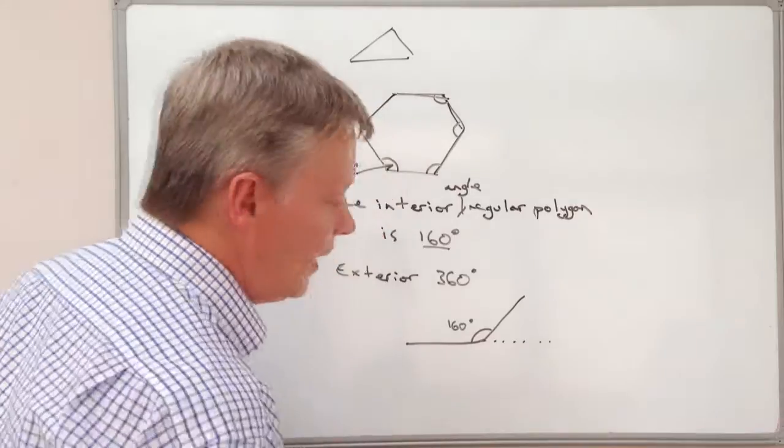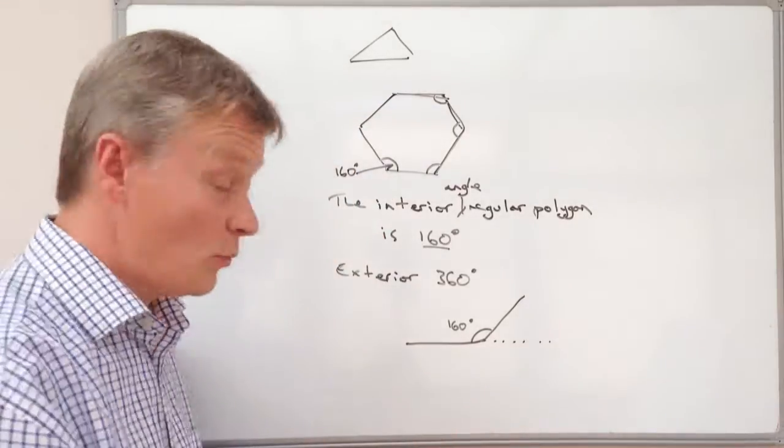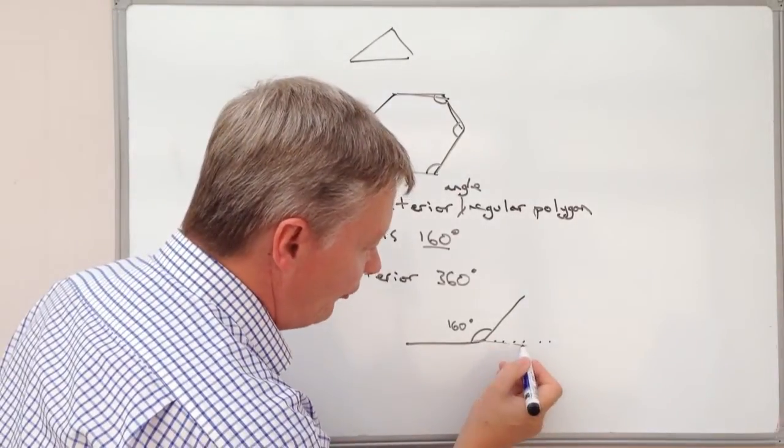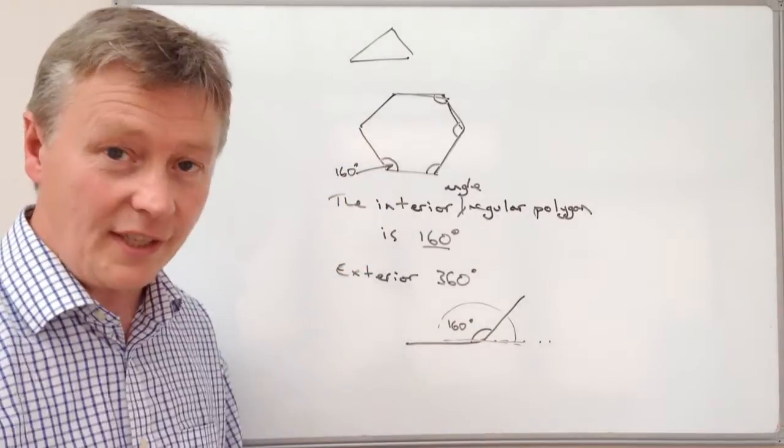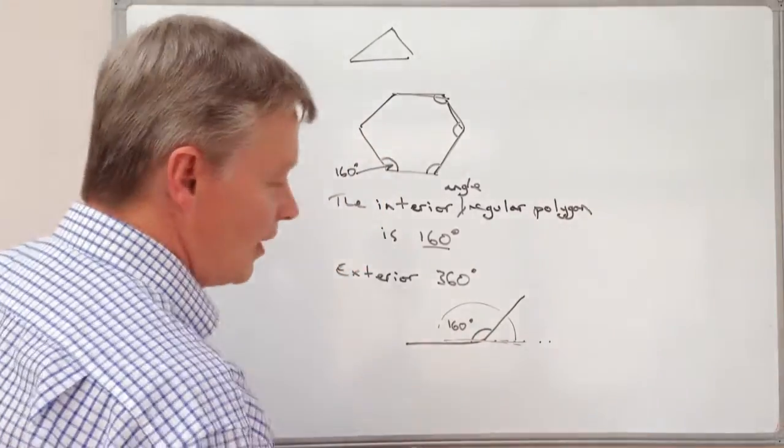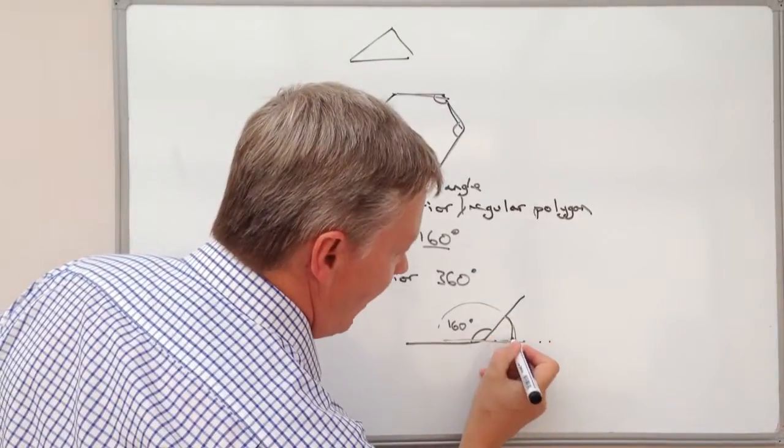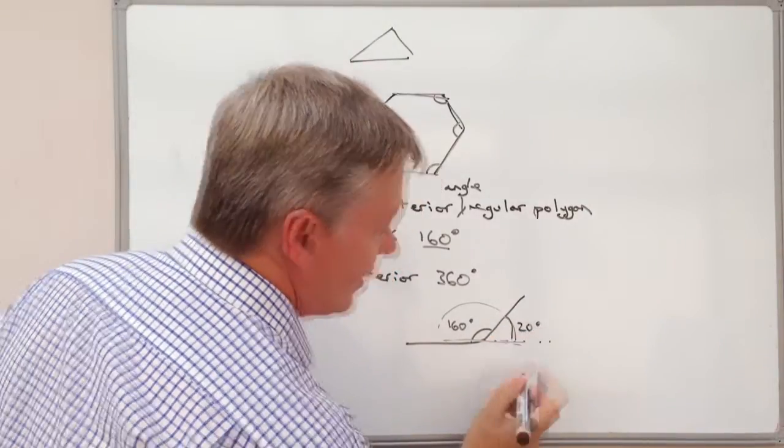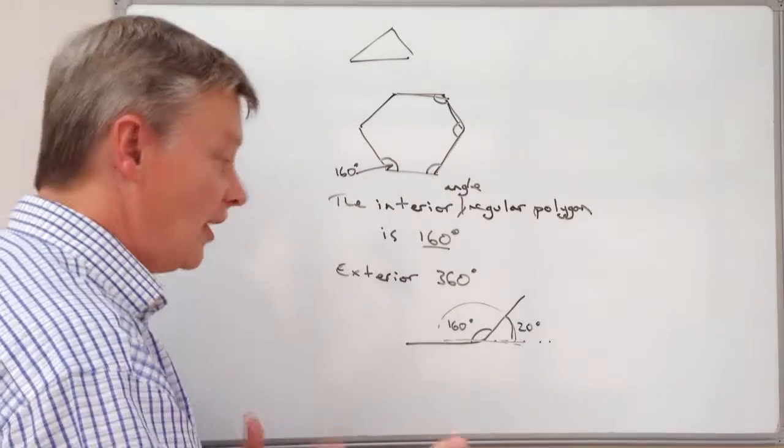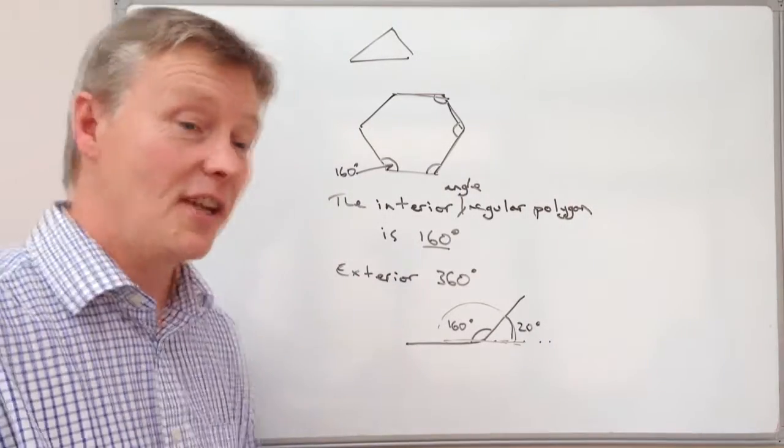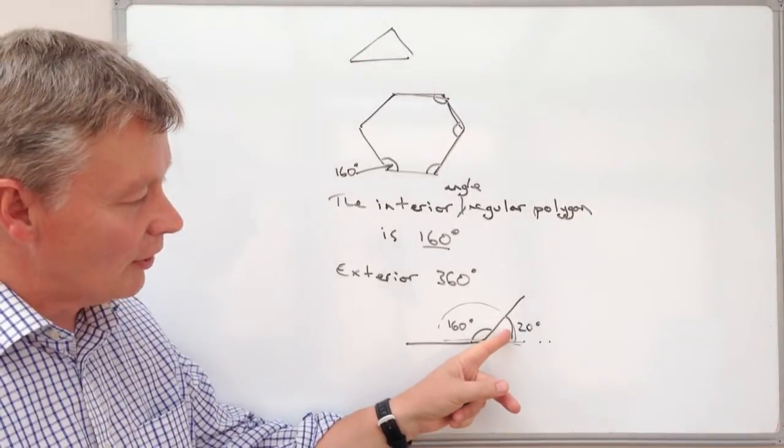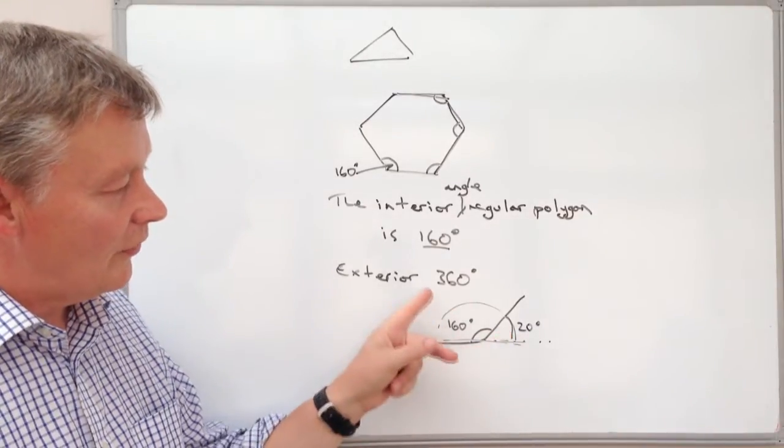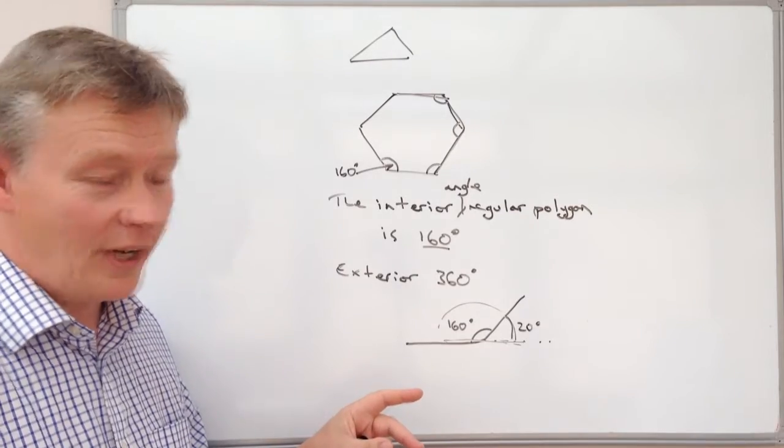And what we know is two things. We know firstly that that full length there is actually 180 degrees. And we know now that that is 20 degrees because 180 take away 160 is 20 degrees. And what we know is that if we add up all of those they're always going to be 360 degrees.